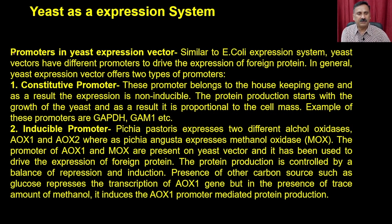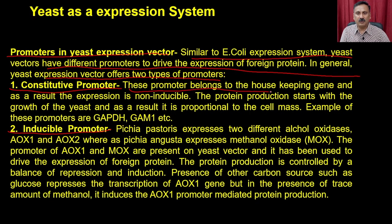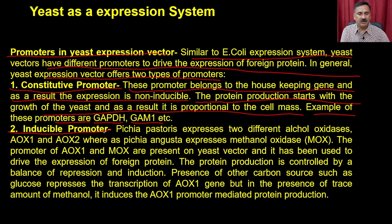The promoters in the yeast expression vector - similar to the E. coli expression system, yeast vectors also have different promoters to drive expression of foreign proteins. In general, yeast expression vectors offer two types of promoters: constitutive promoters and inducible promoters. Constitutive promoters constitutively express the protein of interest and are linked to the growth of the yeast - they belong to housekeeping genes, so expression is non-inducible and protein production starts with yeast growth, proportional to cell mass. Examples of these promoters are GAP, ADH, and GAM1.